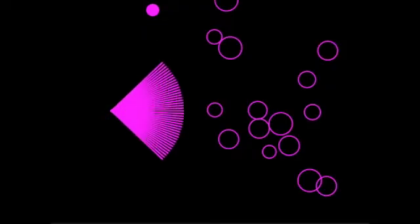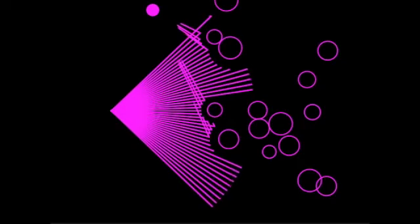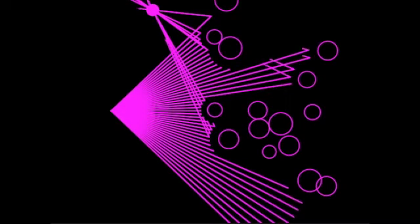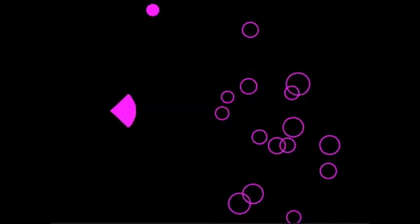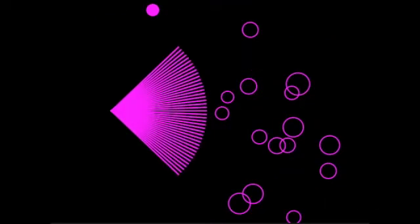If it does, we trace a shadow ray from the intersection point to the light source to see if the point is being illuminated. If it is, we color that pixel the color of the object, or if it's in shadow, we color black.